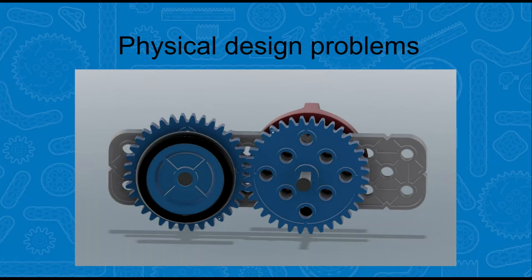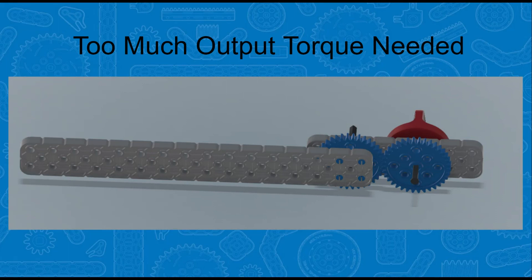There can also be physical design problems. For example, with this design, the wheel is smaller than the gears and it won't work. A redesign would be needed, such as using a sprocket and chain system rather than gears. A common issue with gear systems is the design requires too much output torque for the amount of input torque available. This happens quite frequently when designing arms for robots. Solutions can include providing more input torque by adding a second motor or rubber bands. The gear system can also be redesigned to provide a geared down system to increase the output torque.